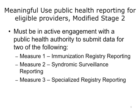Meaningful Use Public Health Reporting for Eligible Providers, Modified Stage 2, must be in active engagement with a public health authority to submit data for two or more of the following measures: Measure 1, Immunization Registry Reporting; Measure 2, Syndromic Surveillance Reporting; and Measure 3, Specialized Registry Reporting. The eligible provider can submit to more than one kind of specialized registry.